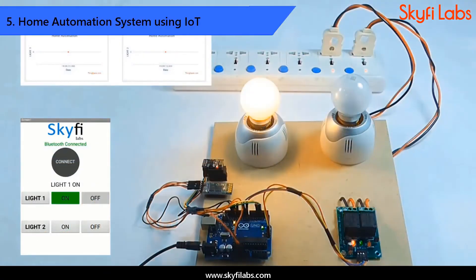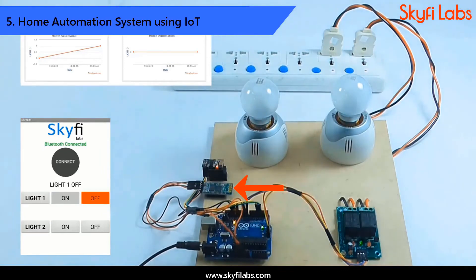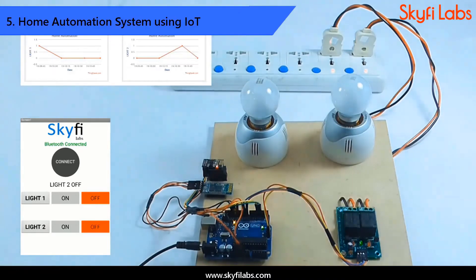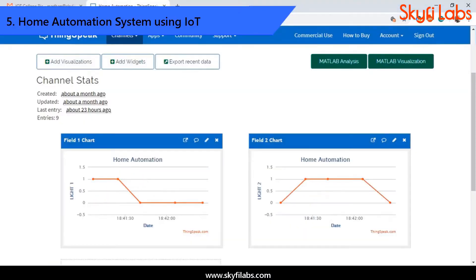Next, you will use Bluetooth as a communication medium and develop a home automation system with which you can control all the electrical devices using your smartphone. The data collected about the electrical devices will also be sent to the cloud for storage and analysis.